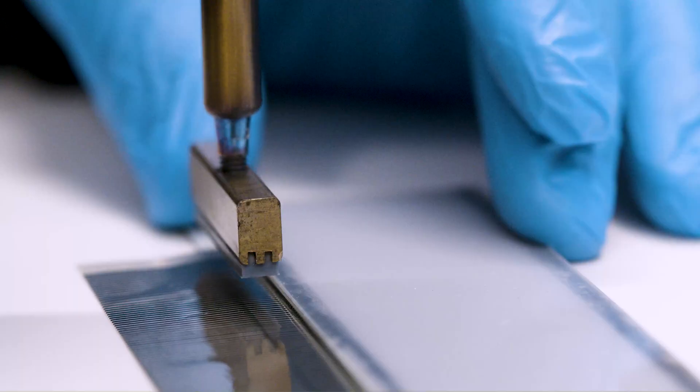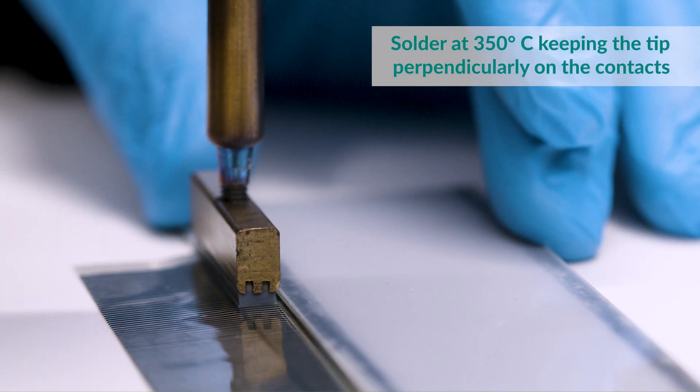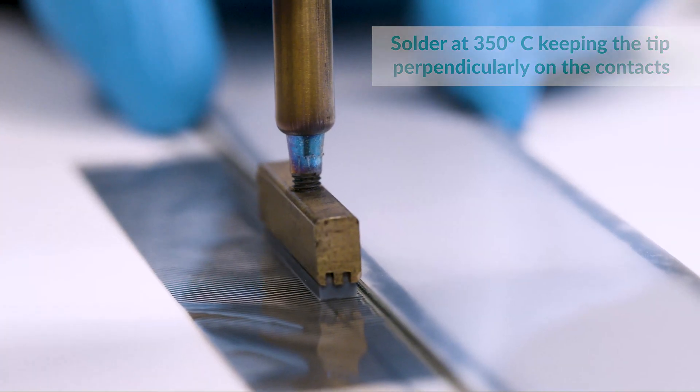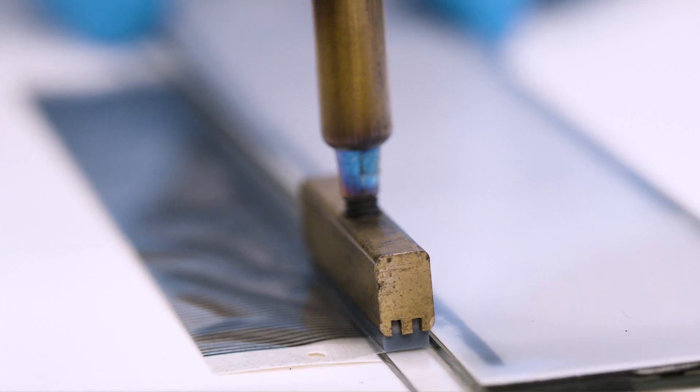To seal it on the LCD, press perpendicularly several times along the whole flat with the soldering iron with T-tip at 350 degrees.